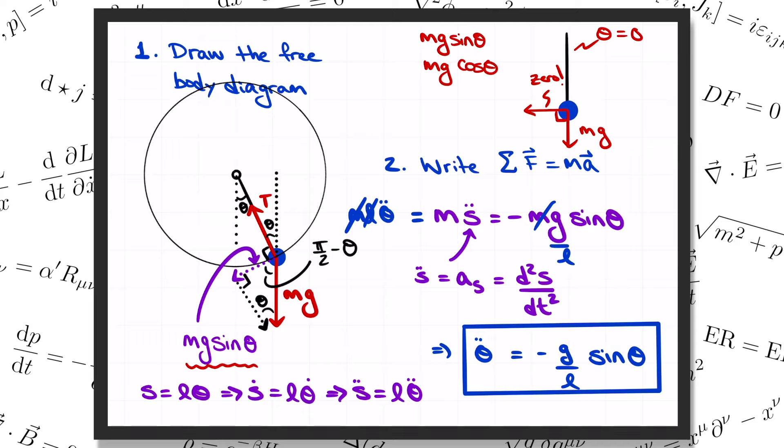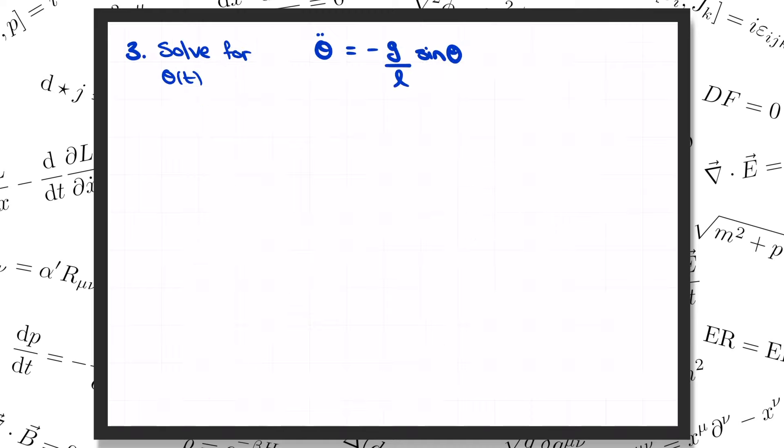So that was step two of Newton's procedure: write down f equals ma. Step three is to actually solve this equation for theta as a function of time. That's pretty hard to do. This factor of sine of theta on the right-hand side makes this a fairly complicated equation. Too complicated, in fact, for us to be able to write down a simple solution in general.